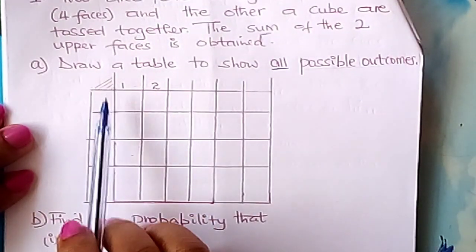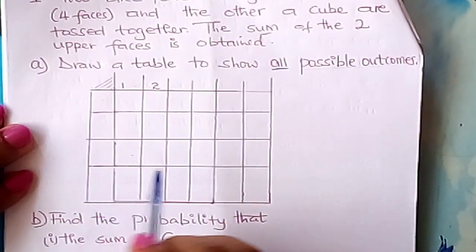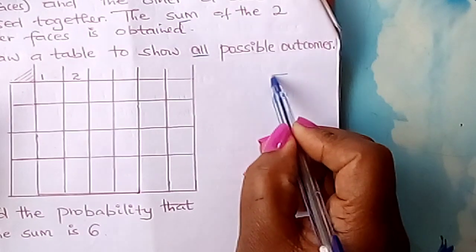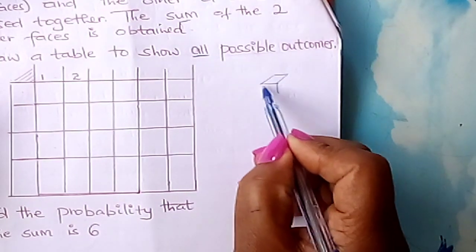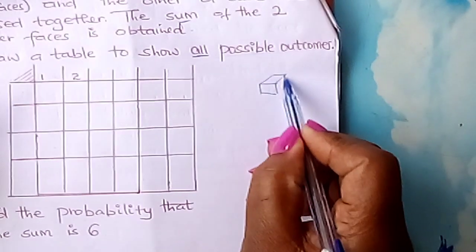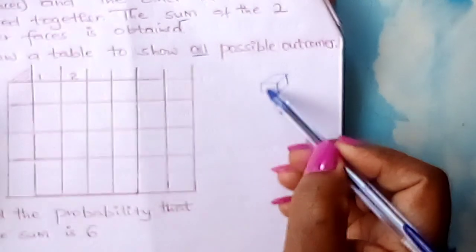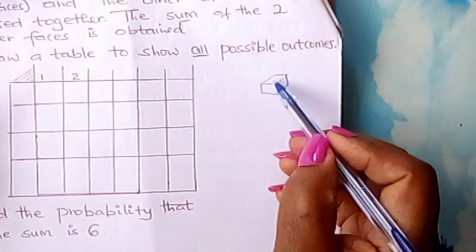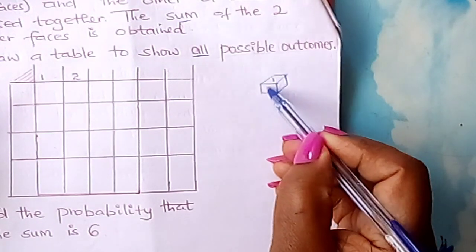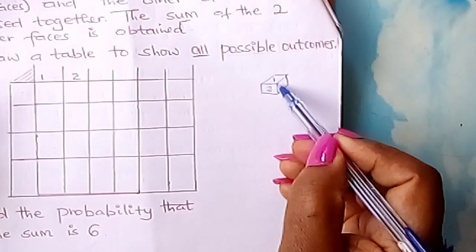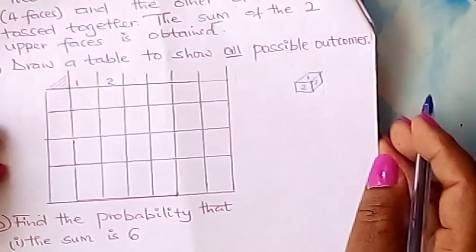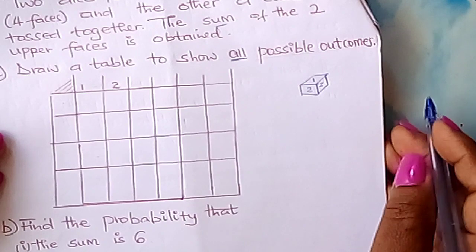I've already drawn the table here. First, fix your cube. A cube has six faces, and the numbers one, two, three, four, five, six are written on those faces. So our cube has six faces, and we place those numbers along the top of the table.